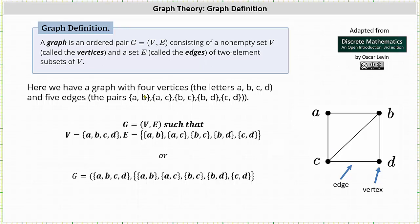On the right, we have a graph with four vertices given by the letters A, B, C, and D, and five edges given by the pairs AB, AC, BC, BD, and CD.